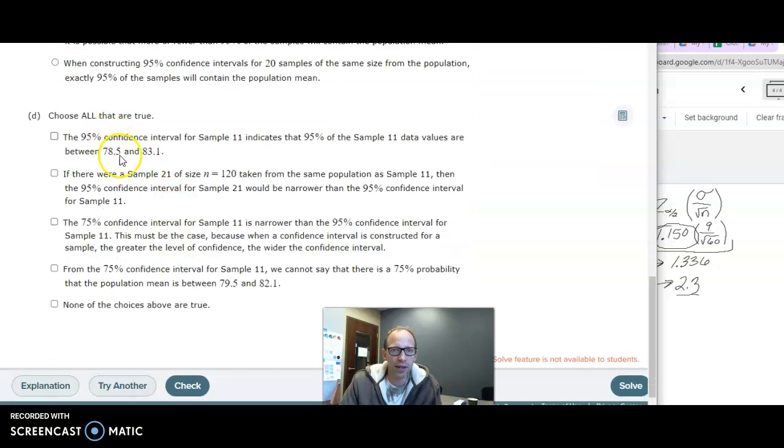And then here, so the confidence interval only gives an estimate about the population mean. It doesn't give anything about a percent of the data values. So that one is not true.